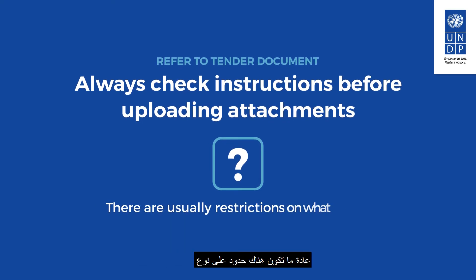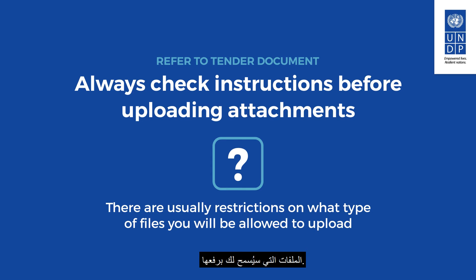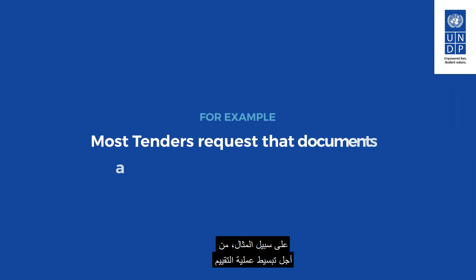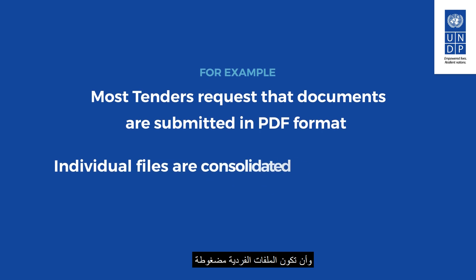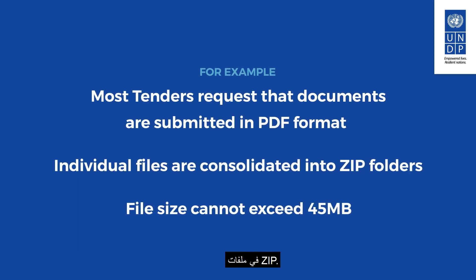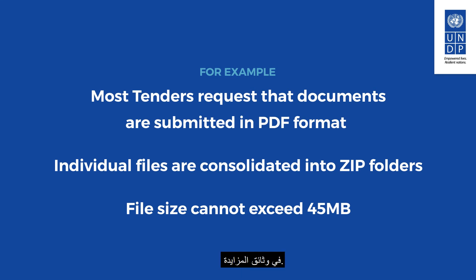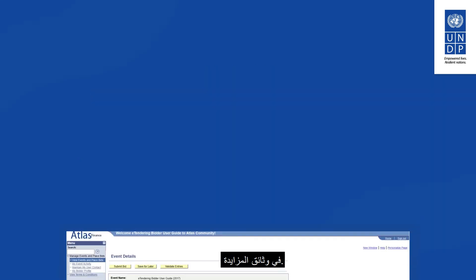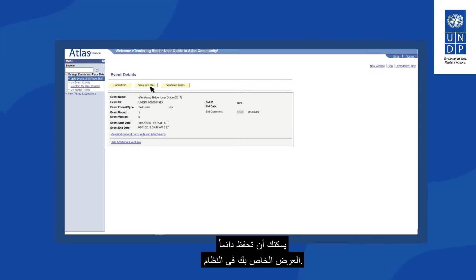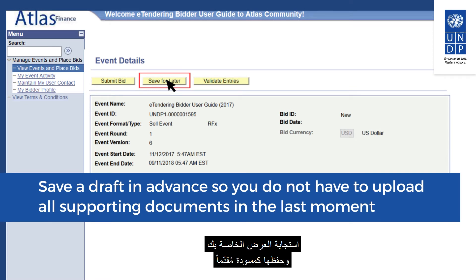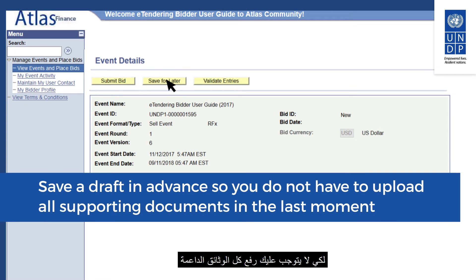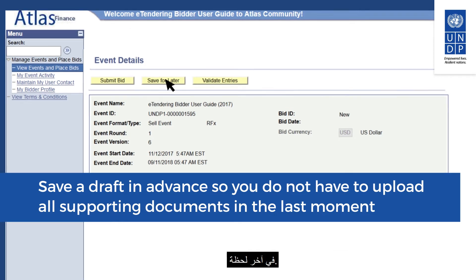There are usually restrictions on what type of files you will be allowed to upload. For example, to simplify the evaluation process for reviewers, most tenders request that documents are submitted in PDF format and that individual files are consolidated into zip folders. You must read and carefully follow the instructions in the tender documents. You can always save your bid response in the system — it is advised that you start creating your bid response and save a draft in advance so as not to have to upload all supporting documents at the last moment.